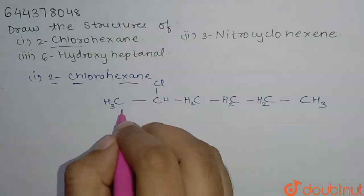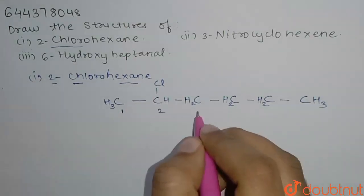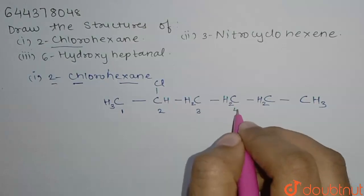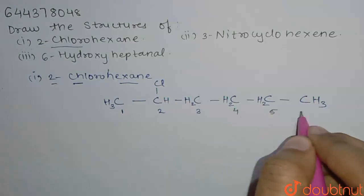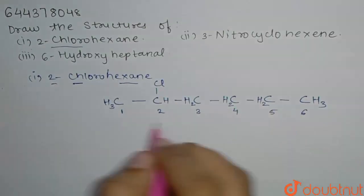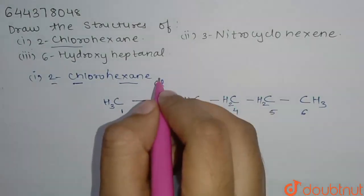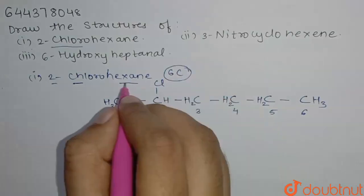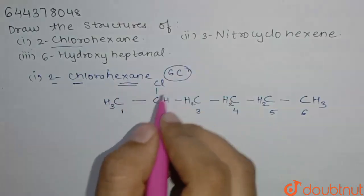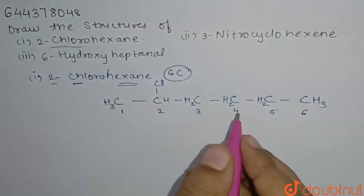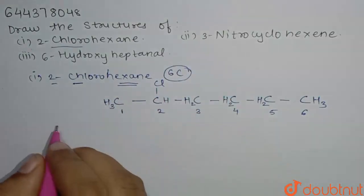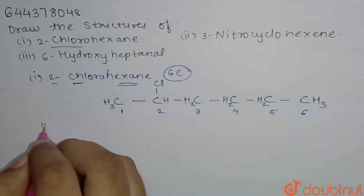Confirming: 1, 2, 3, 4, 5, 6 — this is our 6-carbon chain. At second position we have the chlorine group. So this is 2-chlorohexane.